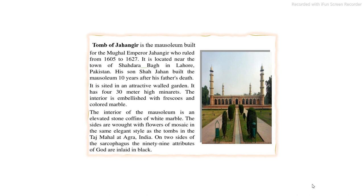The tomb of Jahangir is the mausoleum built for the Mughal Emperor Jahangir. It was built by Shah Jahan ten years after the death of his father. It is located near the town of Shahdara Bagh in Lahore, situated in an attractive garden. It has four 30-meter high minarets. The interior is embellished with frescoes and colored marble. The interior contains an elevated stone coffin of white marble. The sides are wrought with flowers in the same elegant style as the tombs in the Taj Mahal at Agra. On two sides of the sarcophagus, the 99 attributes of God are inlaid in black. This mausoleum is presently situated in Pakistan.